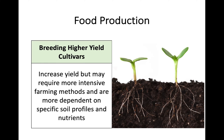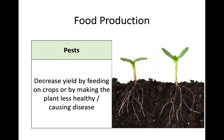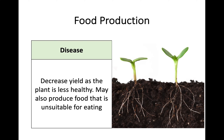Breeding higher-yield cultivars gives a bigger harvest — yield is the amount you can take away and sell or eat. However, these varieties may require more intensive farming and are more dependent on specific soil profiles and nutrients. Controlling pests is also important: pests can destroy crops by feeding on them or cause disease, leading to reduced yield. Disease can cause crops to die or produce rotten food that is unsuitable for eating.